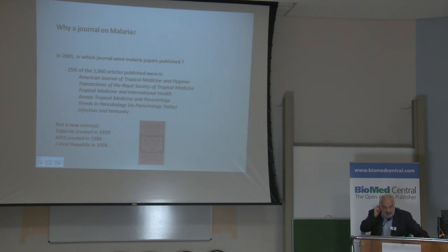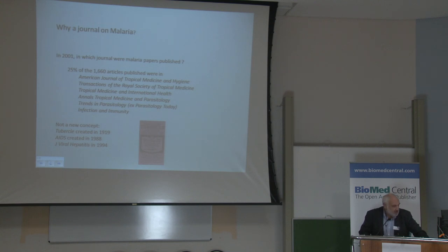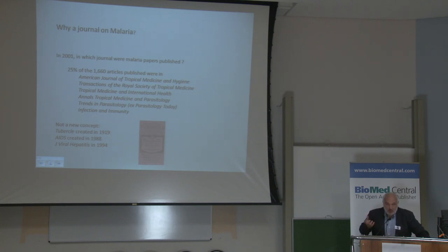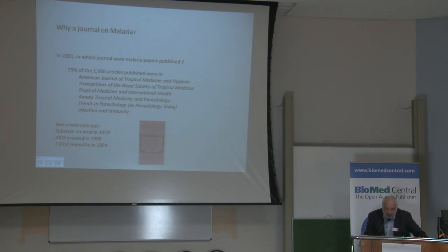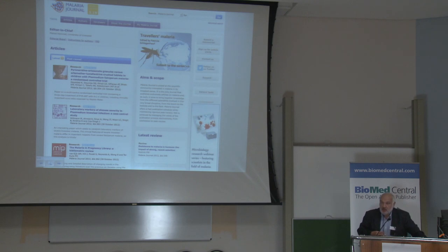When we were approaching our ten years of existence, I decided to do a little looking at what had happened, so I did a survey. At the beginning in 2001, when we started, 20% of 1,600 articles on malaria were actually published in a handful of specialist tropical medicine and parasitology journals, with the American Journal of Tropical Medicine at the top of the list. I followed these journals over the years and at the same time tracked the evolution of Malaria Journal.